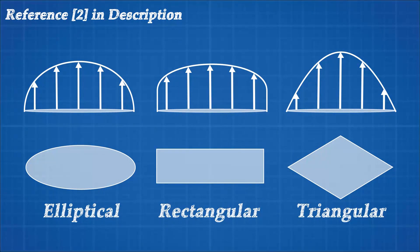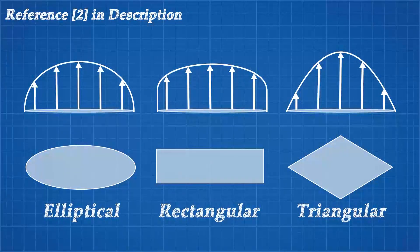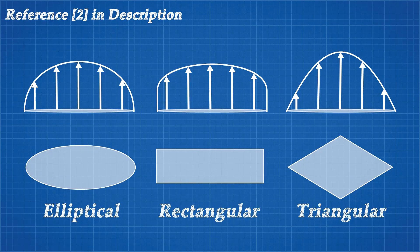A triangular wing has high lift in the centre which rapidly drops off towards the edge. This type of wing has low induced drag, but its lift distribution is far from ideal. So the ultimate goal is to tailor the lift across the wing into the shape of an ellipse, to maximise lift and minimise induced drag.